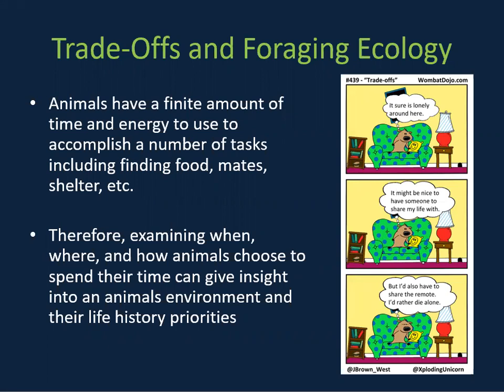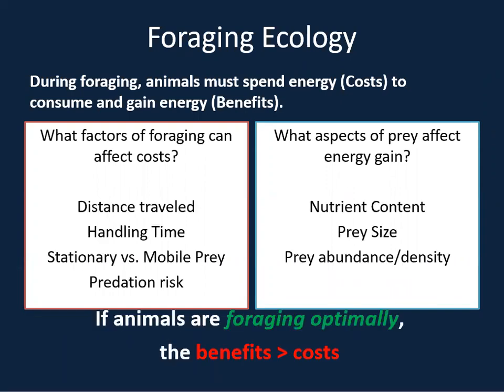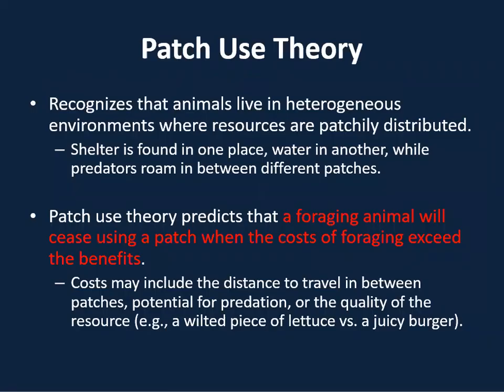During foraging, animals must spend energy — costs — to consume and gain energy — benefits. Knowing what factors of foraging can affect costs and benefits is important. For costs, we have distance traveled, handling time, stationary versus mobile prey, and predation risks. For benefits, we have nutrient content, prey size, prey abundance and density. If animals are foraging optimally, the benefits will outweigh the costs.